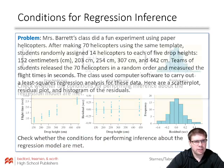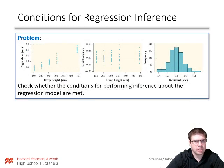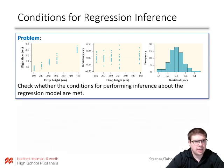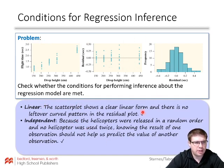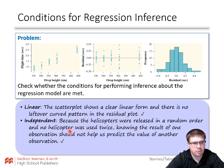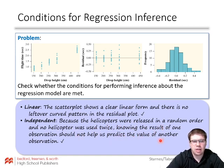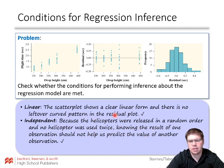Going through the LINEAR conditions: first, is it linear? The best thing is really the residual plot — the scatter plot looks good and the residual plot doesn't show any major curve or patterns. Next, independent: because the helicopters were released in random order and no helicopter was used twice, knowing the result of one flight should not help predict the value of another. We don't really have to check the 10% condition here because there's not a finite population of helicopters.